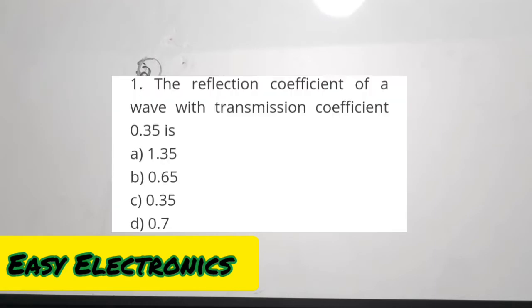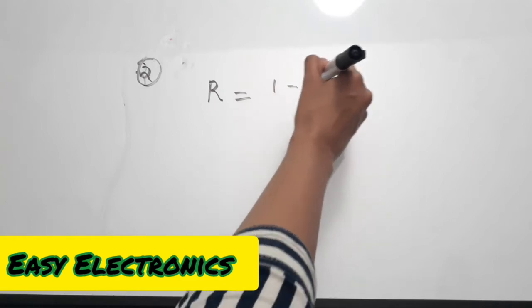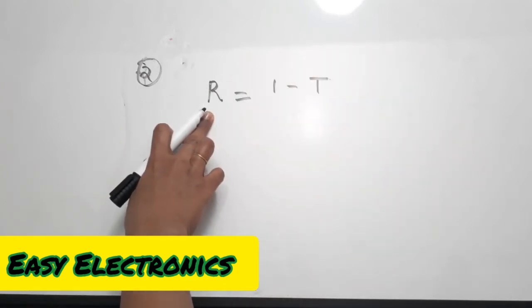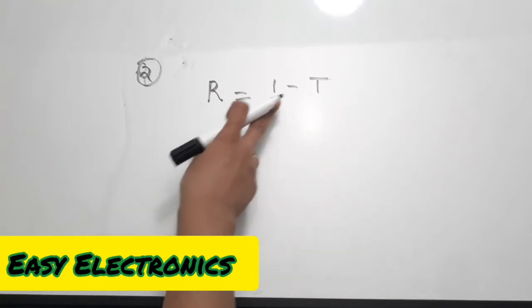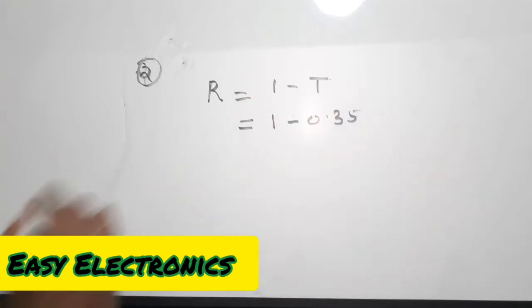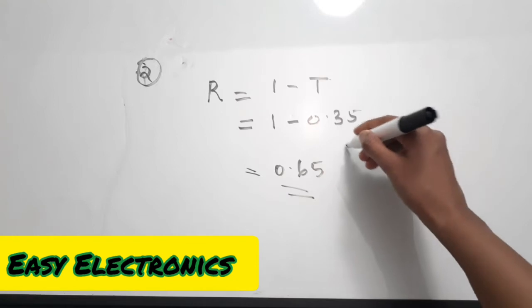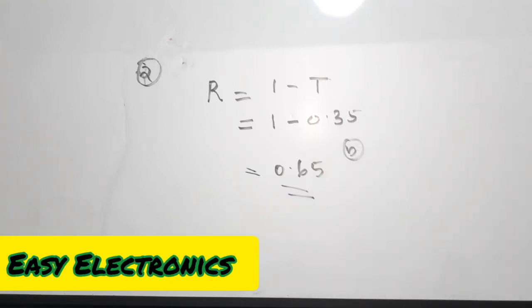The second question is again from EMT. The reflection coefficient of a wave with transmission coefficient 0.35 is dash. The relation between reflection coefficient and transmission coefficient is: reflection coefficient r or tau equals 1 minus transmission coefficient t. So r equals 1 minus t. Here transmission coefficient is given as 0.35, so substituting: 1 minus 0.35 equals 0.65. The correct answer is option B. Moving on to the third question.